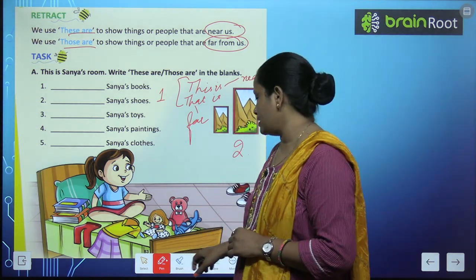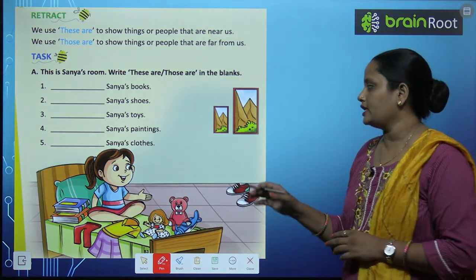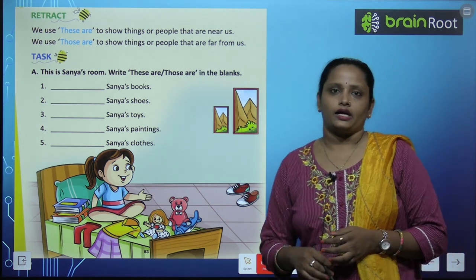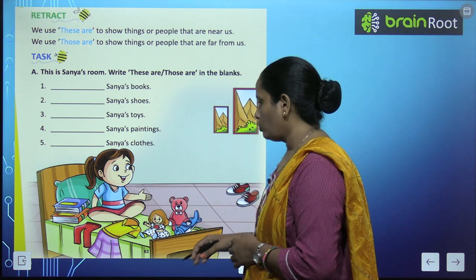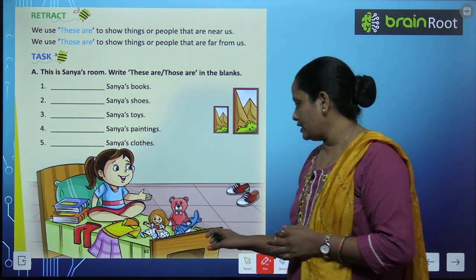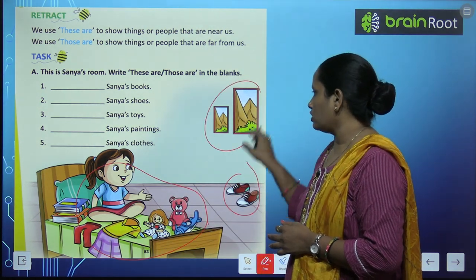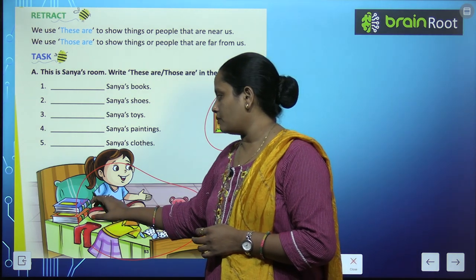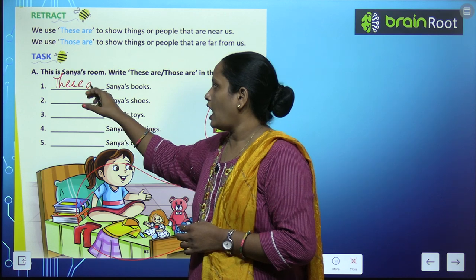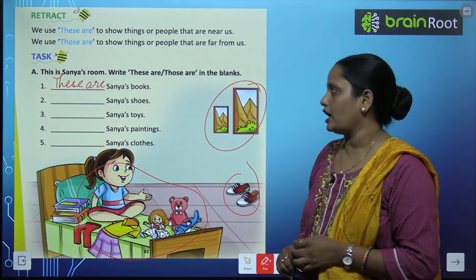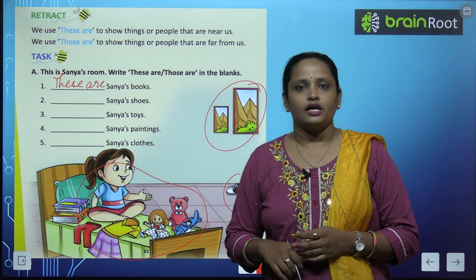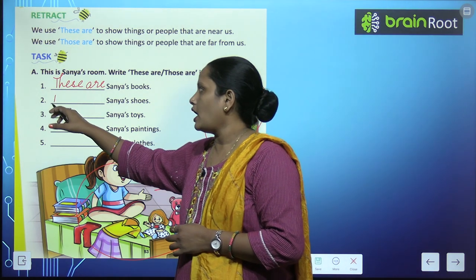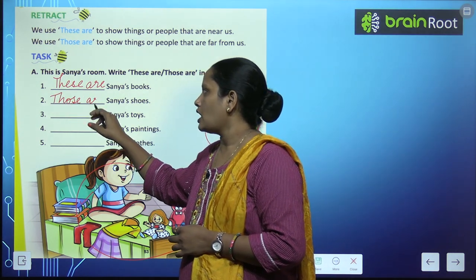Let's do this exercise. This is Sanya's room. We have to write 'these are' or 'those are' in the blanks. Sanya is sitting on her bed. The first blank: Sanya's books are very near, so we write 'these are Sanya's books.' The second blank: Sanya's shoes — how far are the shoes? They are far, so we write 'those are Sanya's shoes.'